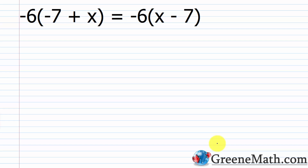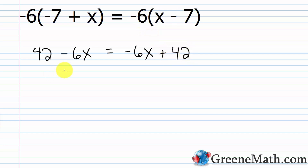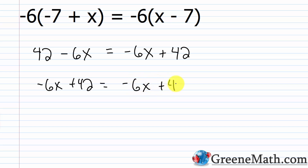Next: negative 6 times the quantity negative 7 plus x equals negative 6 times the quantity x minus 7. Simplifying: negative 6 times negative 7 is 42, and negative 6 times x is negative 6x. On the right, negative 6 times x is negative 6x, and negative 6 times negative 7 is plus 42. Reordering, both sides are negative 6x plus 42 — the exact same thing. So whatever value I choose for x, the same thing happens on both sides, and this is an identity with all real numbers as the solution.